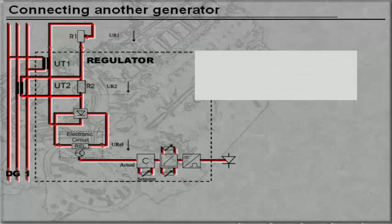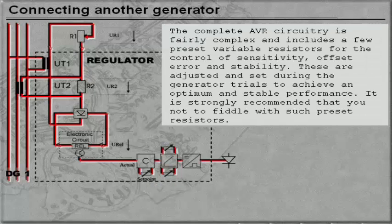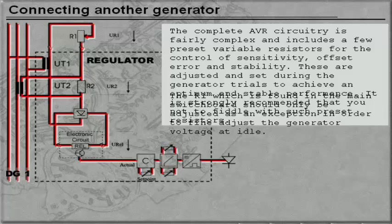The complete AVR circuitry is fairly complex and includes a few pre-set variable resistors for the control of sensitivity, offset error, and stability. These are adjusted and set during the generator trials to achieve an optimum and stable performance. It is strongly recommended that you do not tamper with such pre-set resistors. R1, which is found on the main switchboard, should only be adjusted as an exception, in order to do fine adjustments to the generator voltage when it is idle.